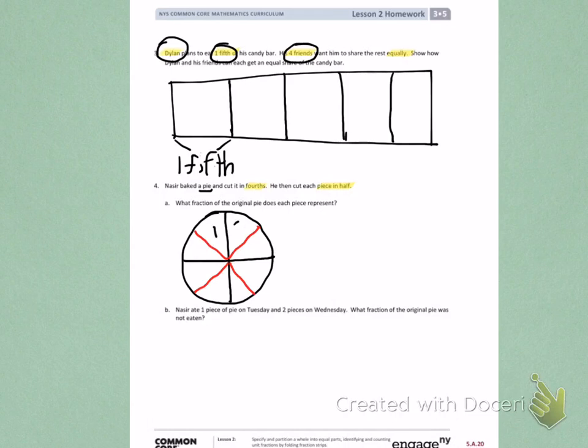When I look at all of these equal parts, I see I have one, two, three, four, five, six, seven, eight parts. So one fractional part, one part of the pie, would be one-eighth.